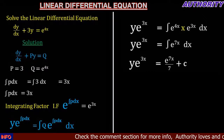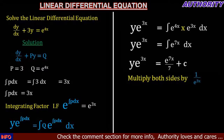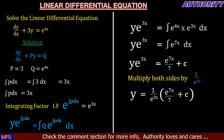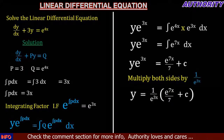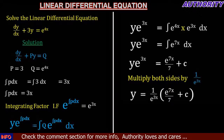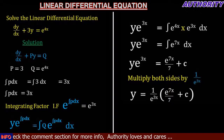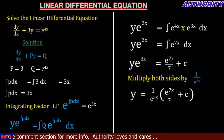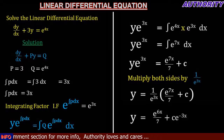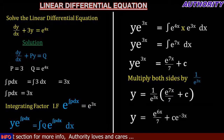Now we want to make y the subject, so we multiply both sides by 1 over e raised to power 3x. Doing so, we get y equals 1 over e raised to power 3x, multiplied by the bracket e raised to power 7x all over 7 plus C. Expanding the bracket, we get e raised to power 6x all over 7, plus C times e raised to power minus 3x.